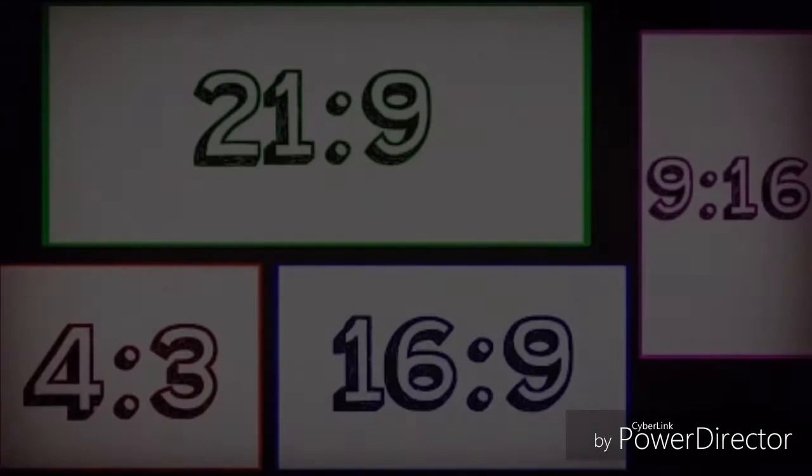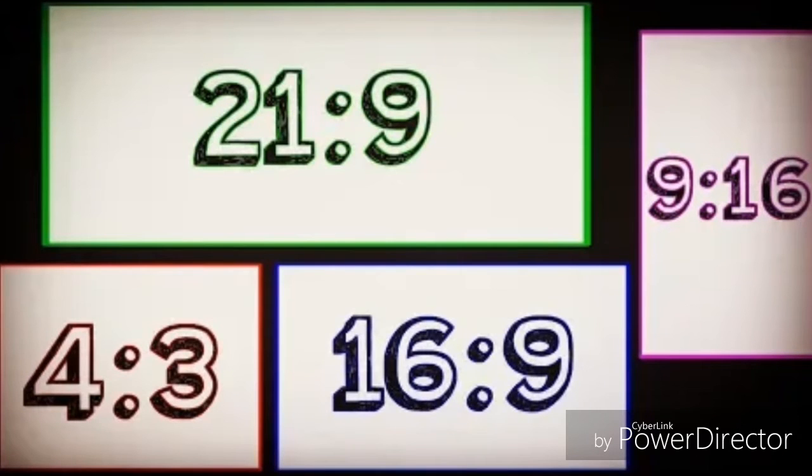Likewise, a 4 by 3 aspect ratio means that for every three units of measurement for height, there will be four equal units of measurement for width.